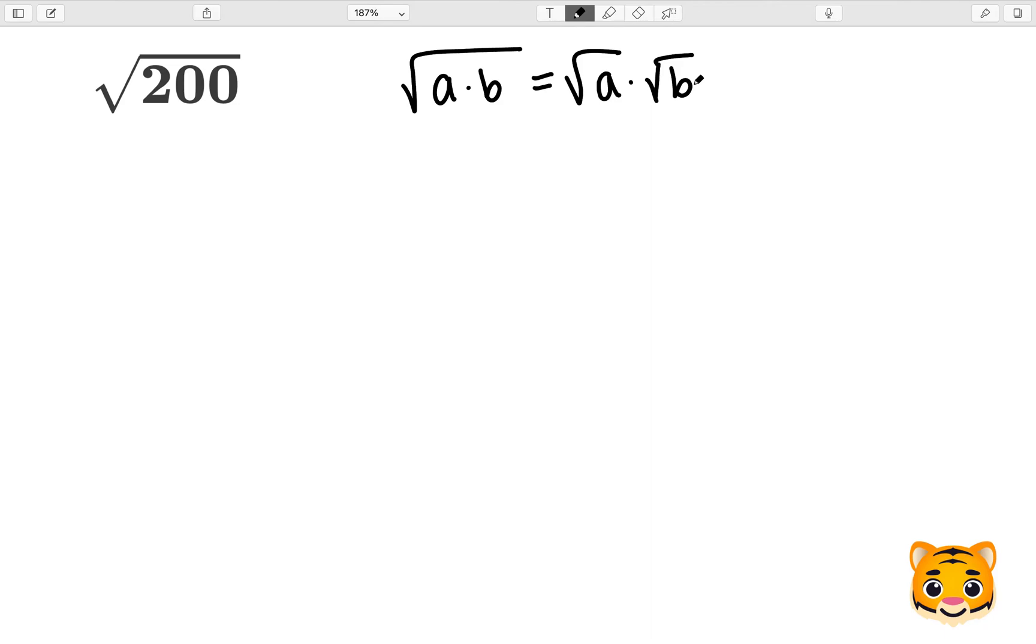This means that if we have two numbers multiplied by each other inside of a square root, we can separate out those square roots and multiply them. In order to do this with 200, we need to look at the factors of 200.